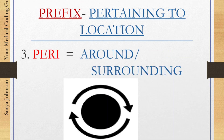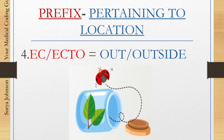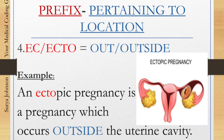The third one is 'peri.' Peri is a prefix which means around or surrounding. Example: pericarditis — peri means inflammation around the heart. Fourth one: 'ec' and 'ecto.' These are prefixes which mean out or outside. For example, an ectopic pregnancy means a pregnancy which occurs outside the uterine cavity.